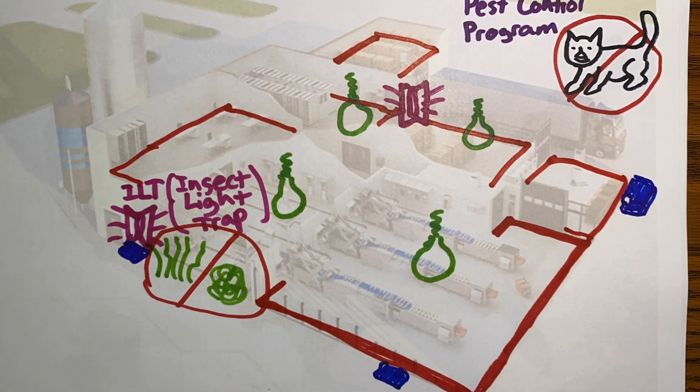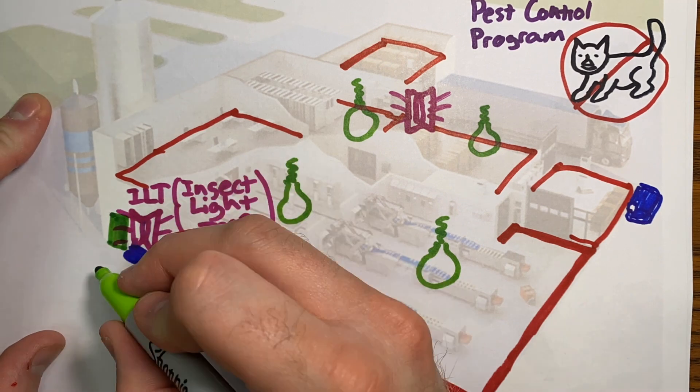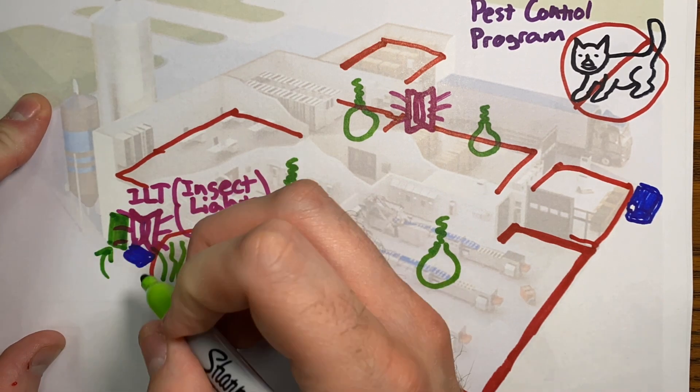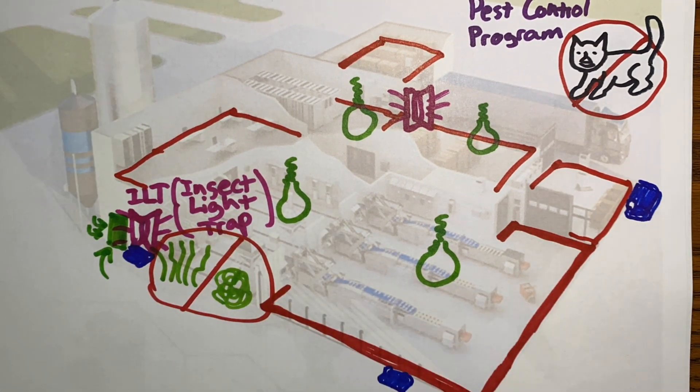Also, are your door sweeps intact? Do your doors shut by themselves or do they get stuck? Do you have proper screening on small outdoor piping or tubing entering your plant? How's your air ventilation?